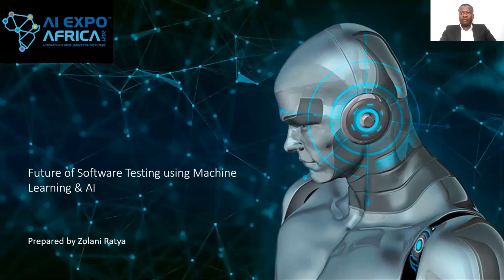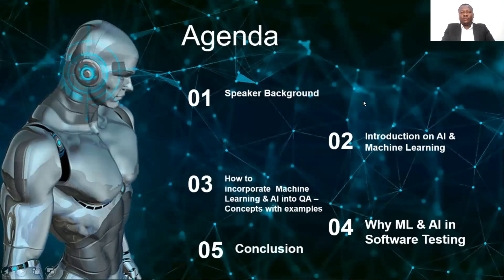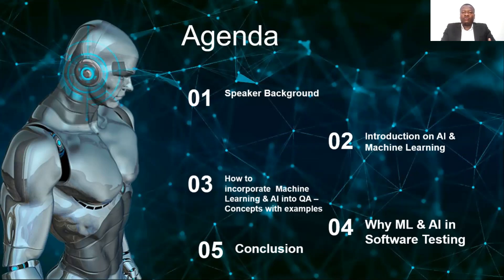Let's get into the agenda for today. This is a summary of what I'll be taking you through. First, I'll give a little background about myself, then an intro to AI and machine learning, and look at how we can incorporate machine learning and AI into QA using concepts and examples. I'll also prove the value of why we need machine learning and AI in software testing, and finish with a summary conclusion.